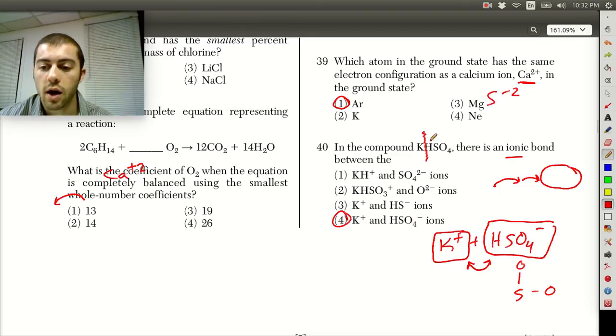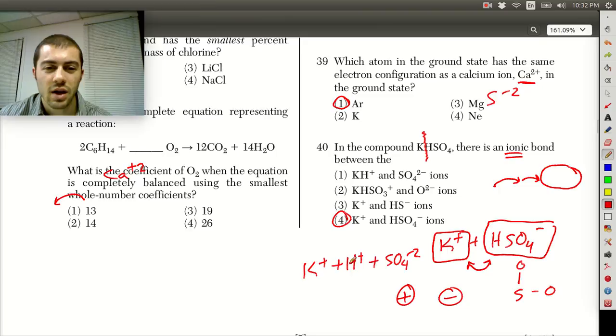So we have K plus and HSO4 minus. So the key here is to just figure out how are we going to break up this compound in a way that would make sense for an ionic bond. It already told us that it was ionic bond here. So what we might think to do is like K plus plus H plus plus SO4 minus two. But you can't really make an ionic bond here. There's too many ions floating around, right? An ionic bond is always going to be something positive and something negative. So here we have two positives. It just really wouldn't work out well for an ionic bond. So again, with an ionic bond, we have something positive, something negative. So our positive here was K plus, our negative was HSO4 minus. So that would be answer choice four.